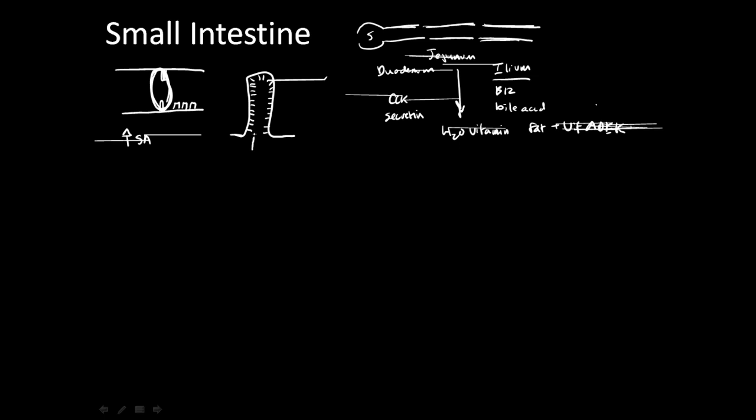In the middle of each villus would be lymphatics, where fat can be absorbed, or capillary systems, as well as the immune system response, to make sure that the things we absorb aren't harmful. In addition, on each individual cell, there's something called the brush border, or the microvilli, which are indentations and increased surface area that improves its absorptive capability.